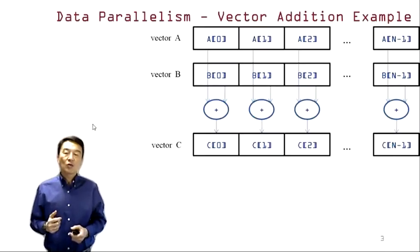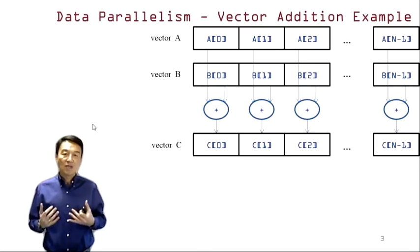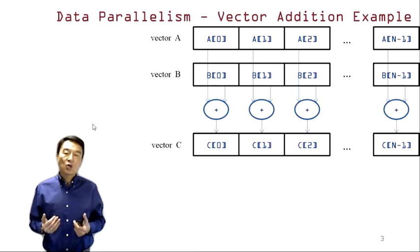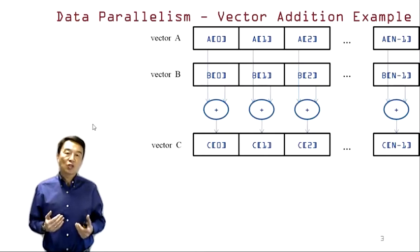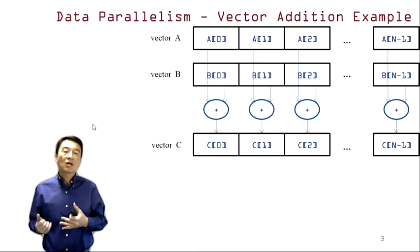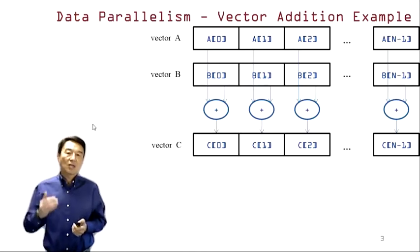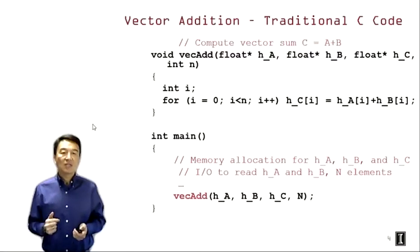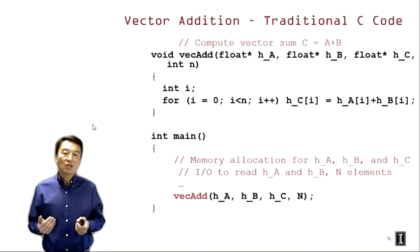This slide reviews the vector addition example. We use this example to illustrate data parallelism. Today we're going to use this example to show how you can easily convert a standard sequential C program for vector addition into a heterogeneous parallel piece of code to do the same functionality. Just as a reminder, each CUDA thread will be adding an element of A and an element of B, and assigning the result to an element of C.